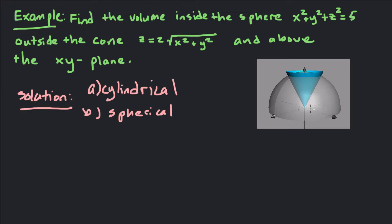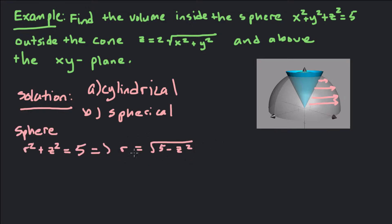In cylindrical coordinates, we're going to integrate r first. What we're going to do is say that r goes from the cone out to the edge of the sphere. So we need the sphere and cone equations solved for r. For the sphere, r equals the square root of 5 minus z squared. For the cone, written in cylindrical coordinates that's z equals 2r, so solving for r gives r equals z over 2.